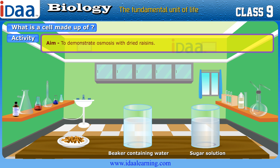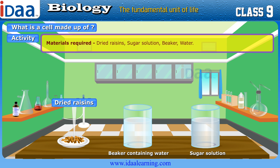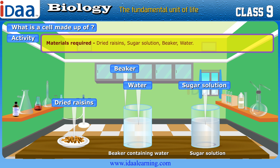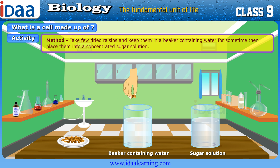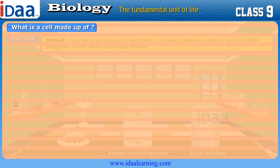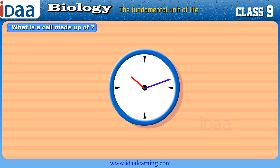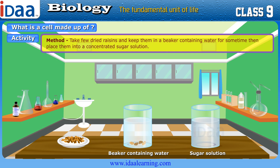Activity: Aim — To demonstrate osmosis with dried raisins. Materials required: dried raisins, sugar solution, beaker, and water. Method: Take a few dried raisins and keep them in a beaker containing water for some time. Then place them into a concentrated sugar solution.